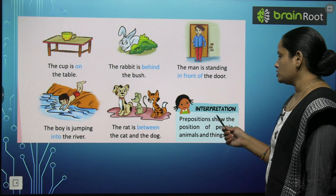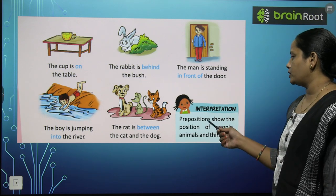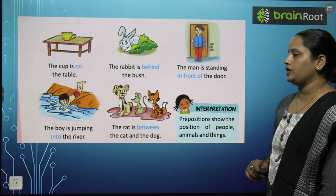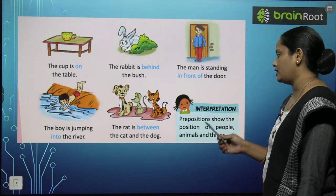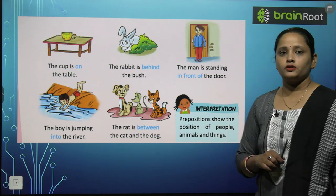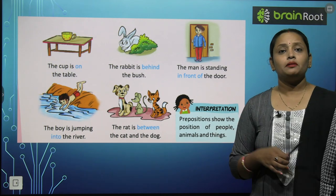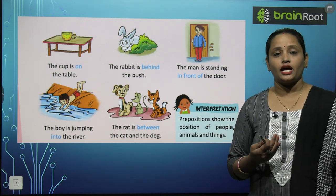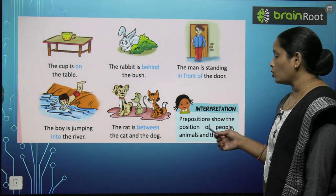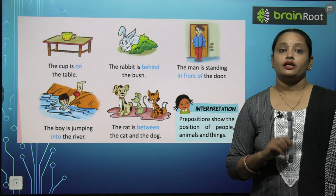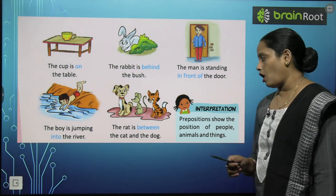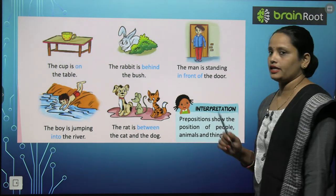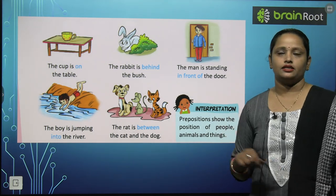Prepositions show the position of people, animals, and things. Prepositions kya batate hain? Position batate hain — logo ki, animals ki aur things ki.